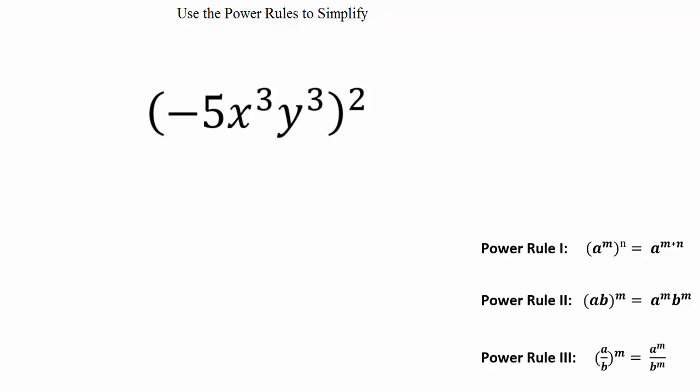Let's take a look at this problem. We have negative 5x³y³, all raised to the second power.